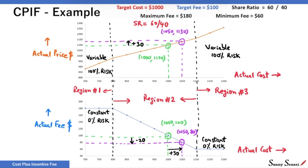In Regions 1 and 3, CPIF contracts behave like CPFF contracts, with the seller bearing no risk. The contract share ratio is valid only in Region 2. Therefore, this region is also known as the range of incentive effectiveness, or RIE. With this, we come to an end of this lesson. I hope this lesson has helped you improve your understanding of CPIF contracts. I will be teaching how to calculate the range of incentive effectiveness in my next lesson. Good luck with your PMP exam.